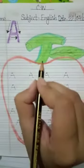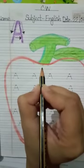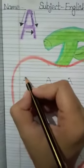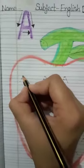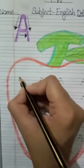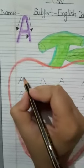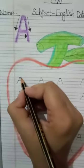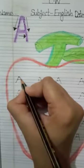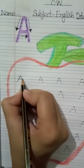Okay? Firstly, you have to take pencil like this and you have to draw A, top to bottom like this. Again, you have to draw top to bottom like this and you have to complete.